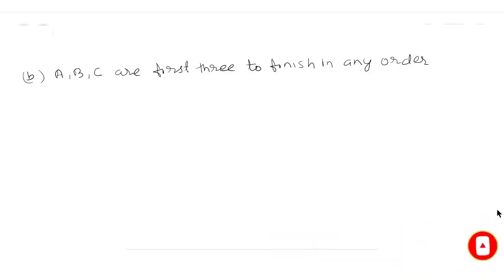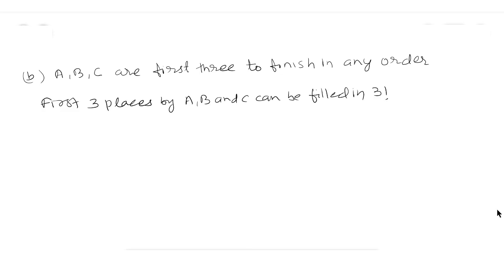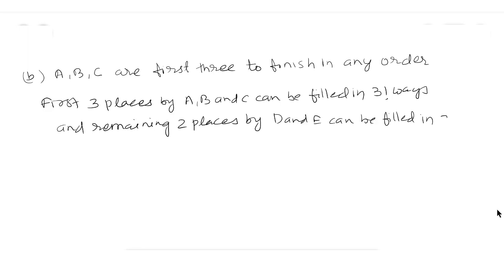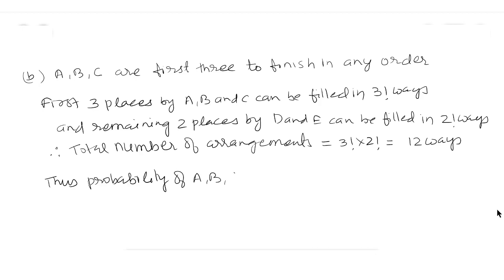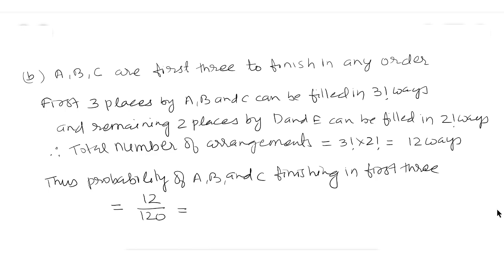Part B: A, B, C are the first 3 to finish in any order. The first 3 places by A, B and C can be filled in 3! ways, and the remaining 2 places by D and E can be filled in 2! ways. Therefore, total number of arrangements equals 3! multiplied by 2! which is equal to 12 ways. Thus, the probability of A, B and C finishing in the first 3 equals 12 upon 120 which is equal to 1 upon 10.